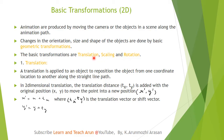The first one is translation. Translation is applied to an object to reposition the object from one coordinate location to another along a straight line path. So this is the definition of translation.